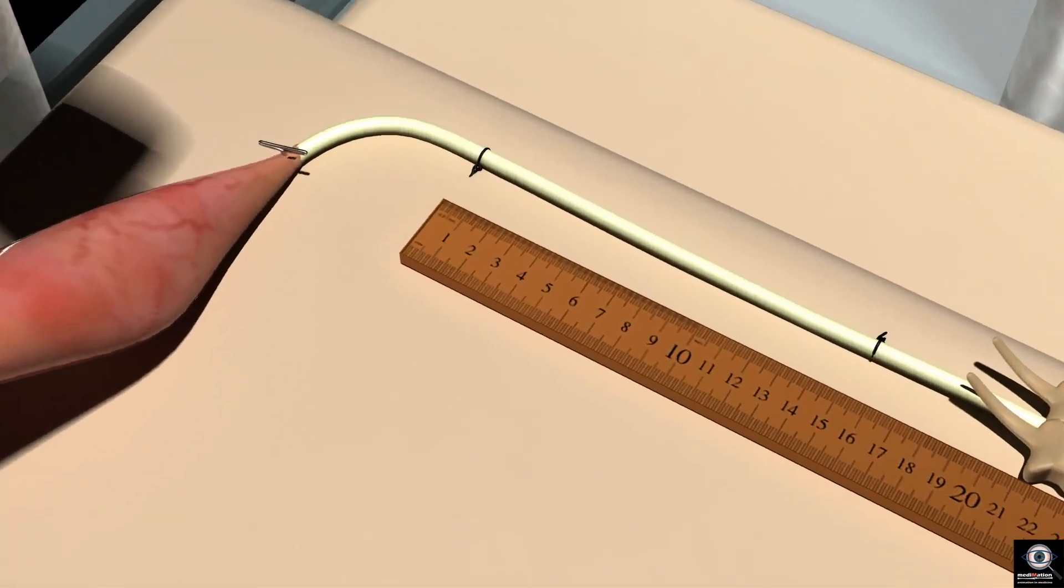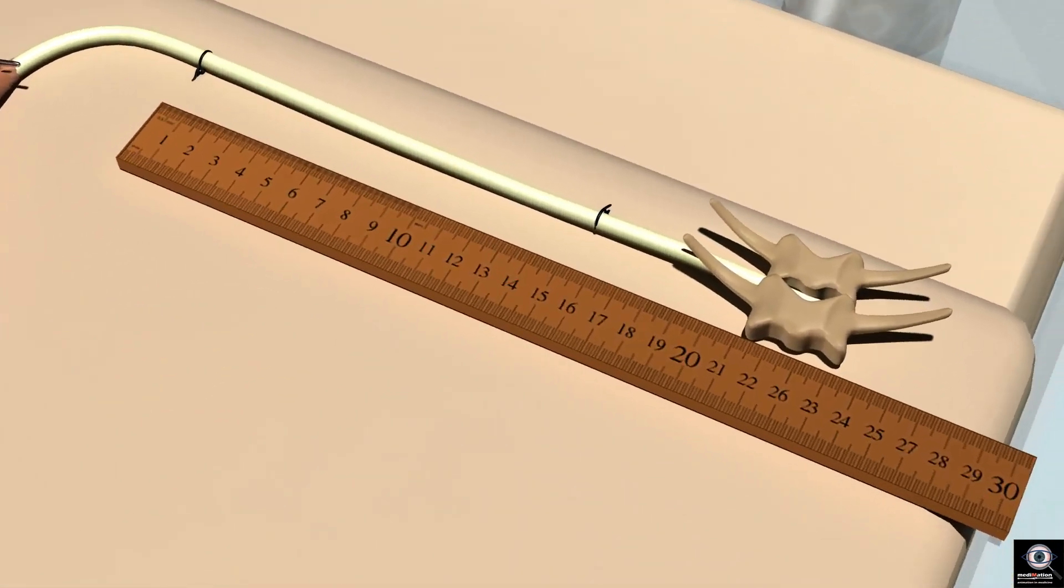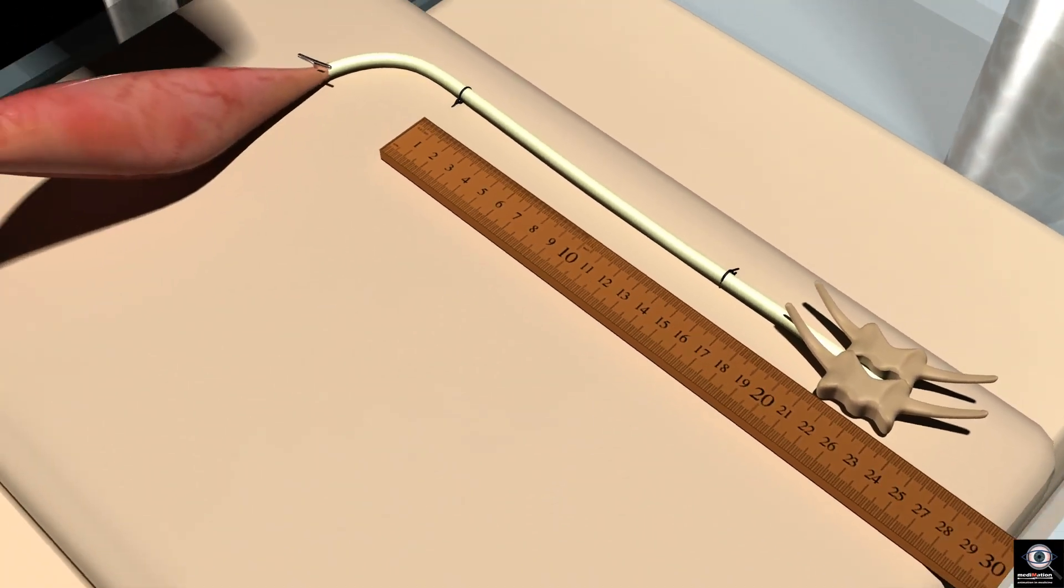We measure the distance between the two points of stimulation on the nerve accurately. We can now use the graph to calculate the velocity of conduction of the nerve.